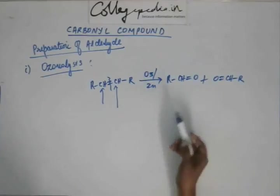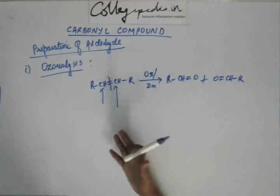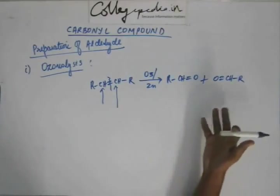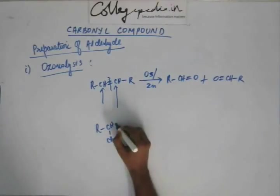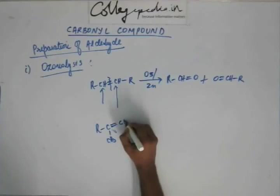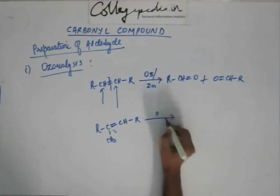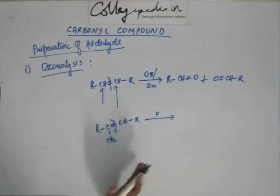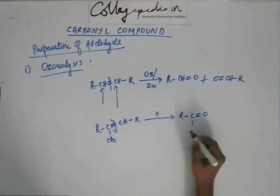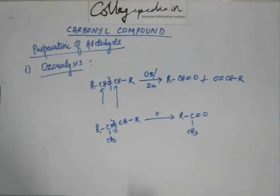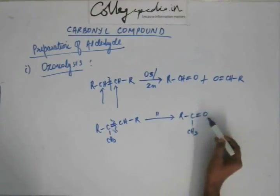Depending upon the alkene, the product can be an aldehyde or a ketone. For example, from the left-hand part of this molecule, you get a ketone because there are R groups on both sides of the carbon. You can quickly recognize this is a ketone — as we just saw, if you have R groups on both sides of C=O, that is a ketone.